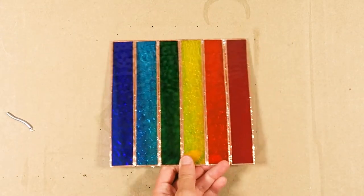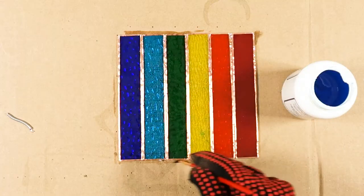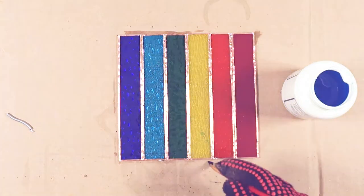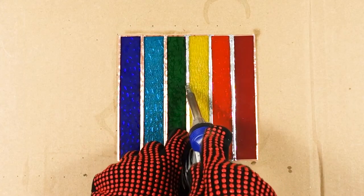Once you're done with the front, turn it over and put liquid flux on the back. Before soldering, clean the soldering iron tip again. Go down each seam line and edge with solder.